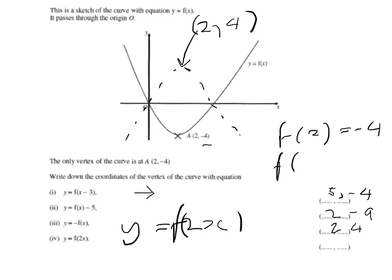So, with f of 2x, we need our x to be 1, because f of 2 times 1 is f of 2, which will equal minus 4. So, the answer here, then, is (1, -4).